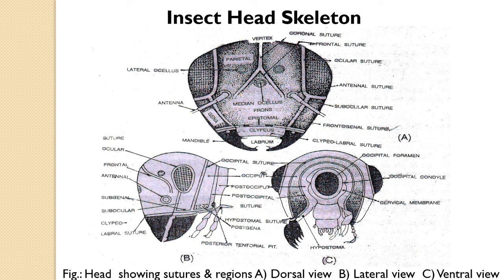The head bears externally a set of sensory and gnathal appendages. Sensory organs include a pair of compound eyes, antennae, and two or three ocelli. The gnathal appendages include various appendages collectively known as mouthparts, which include the labrum, mandible, maxillae, and labium. As we learned in the previous video, the head of a generalized insect is made up of six segments: the pre-antennal segment, antennal segment, intercalary segment, mandibular segment, maxillary segment, and labial segment.